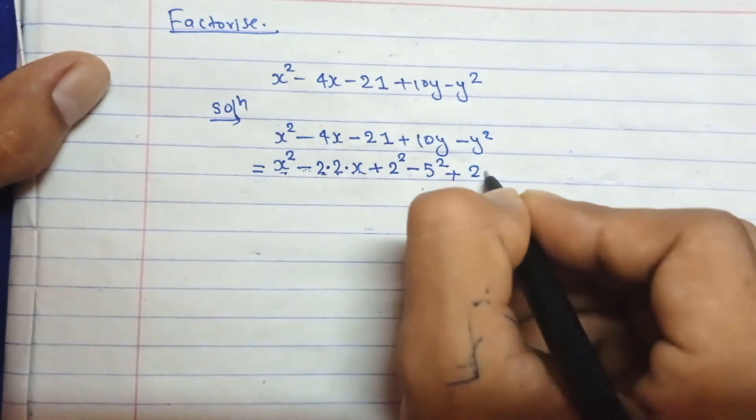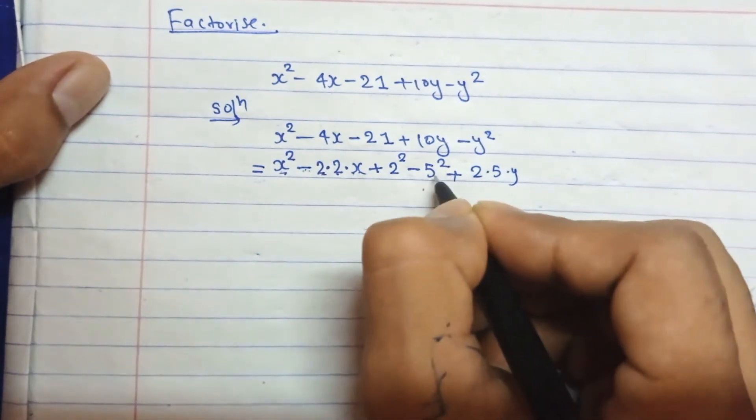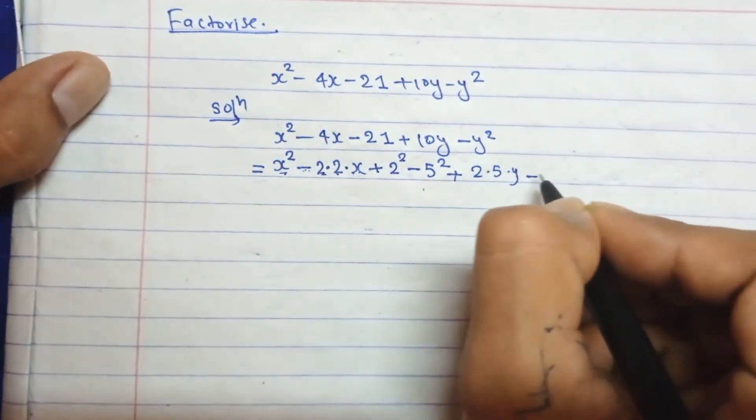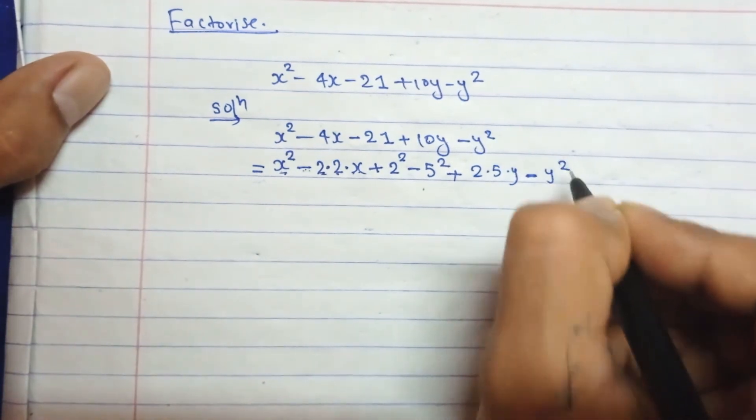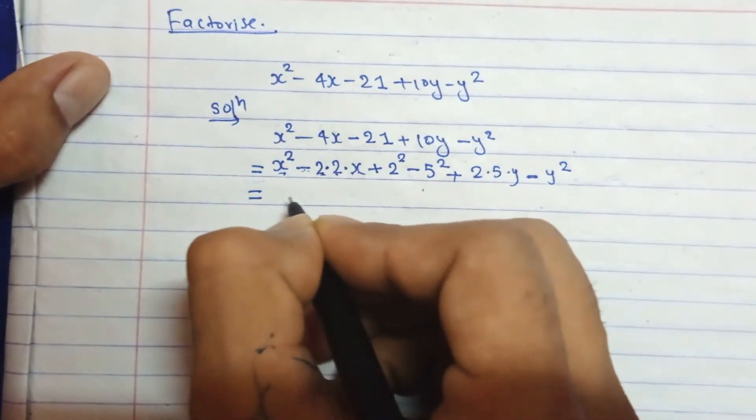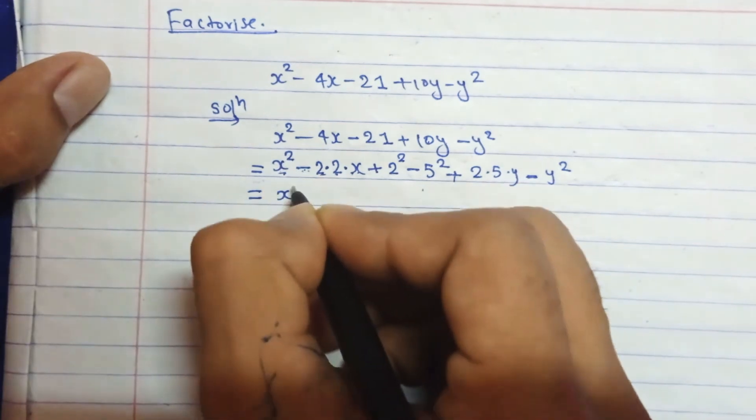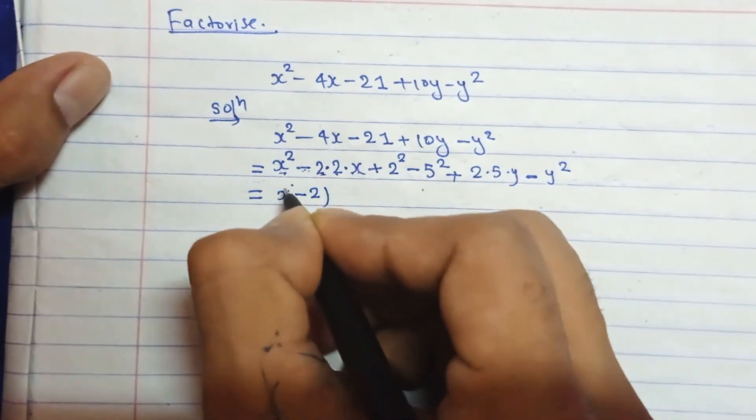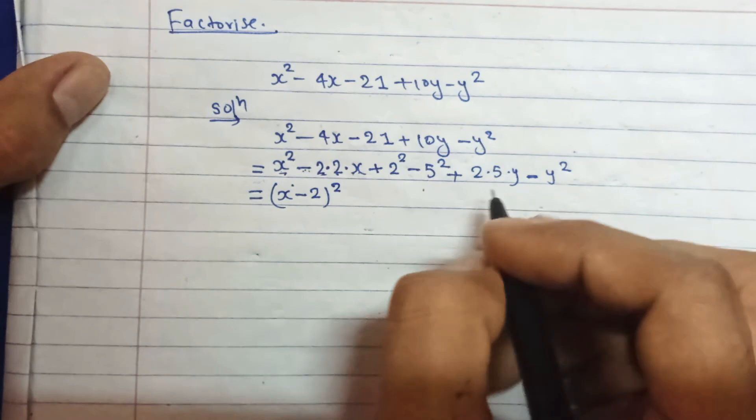And in the next step, if here is -5², here you can write 2 times 5 times y, a² + 2ab - b², here is y². And in the next step we can do here (a - b) whole square.